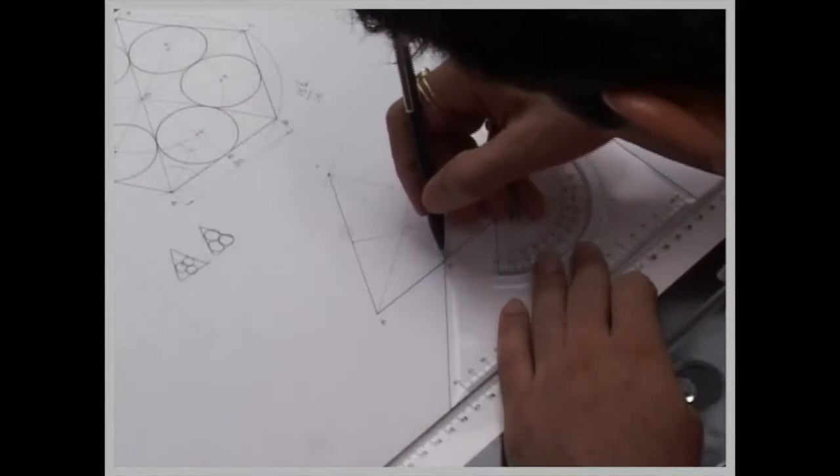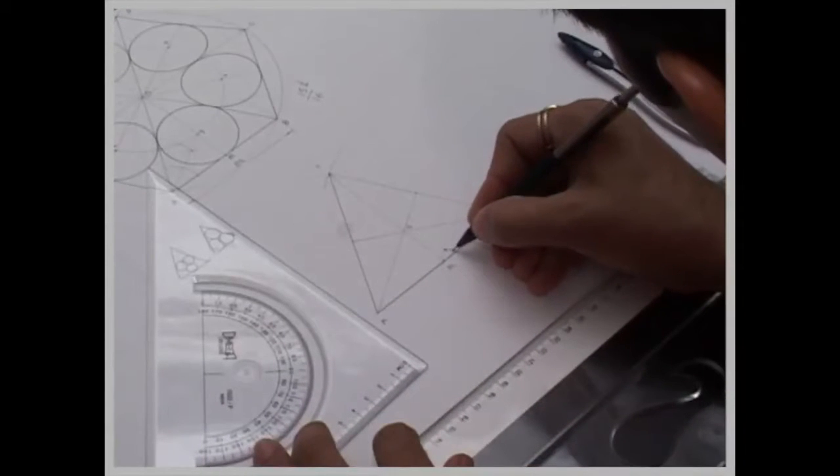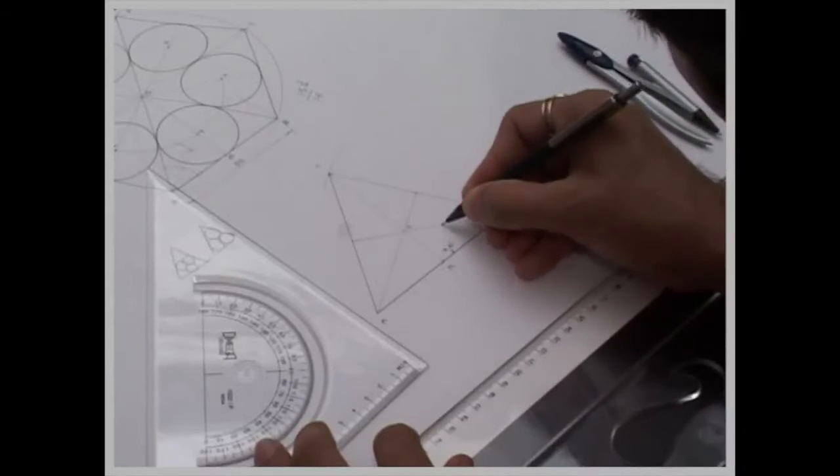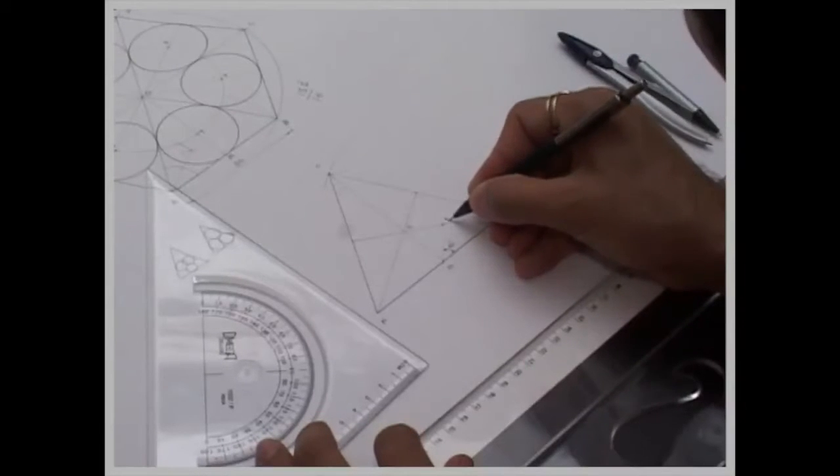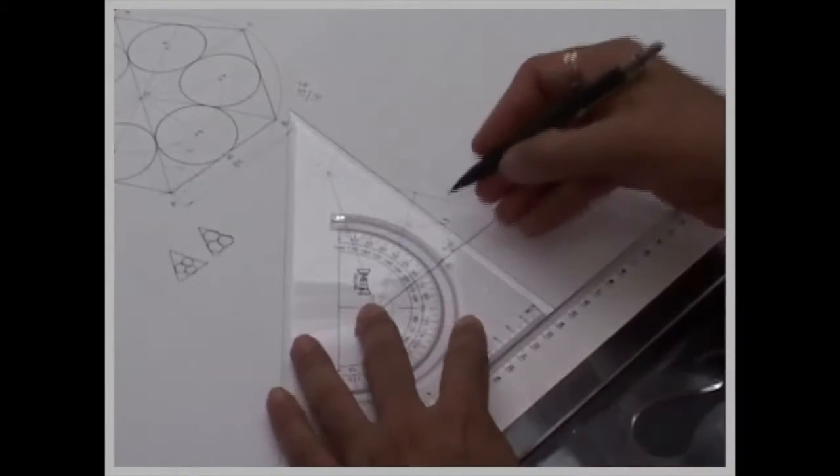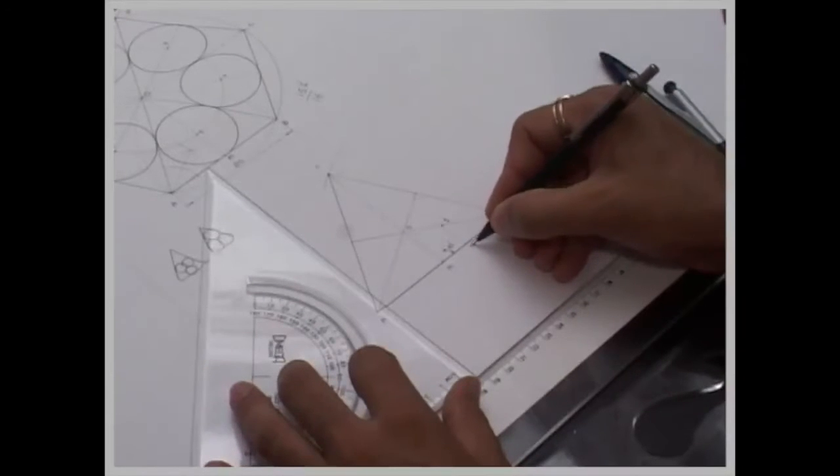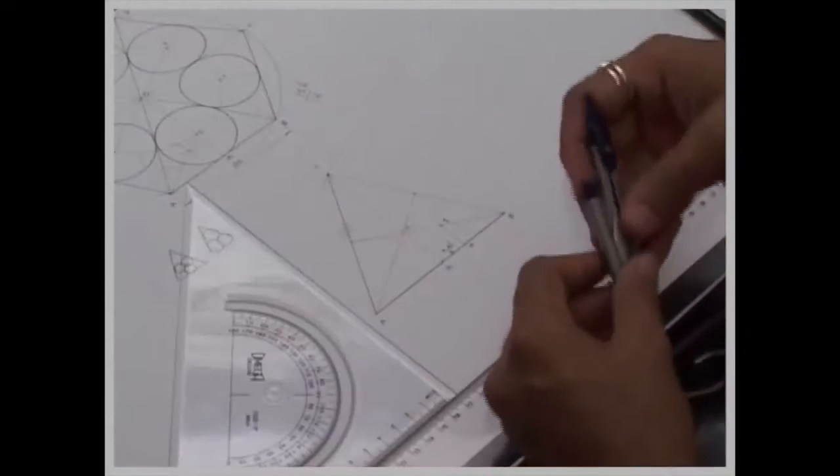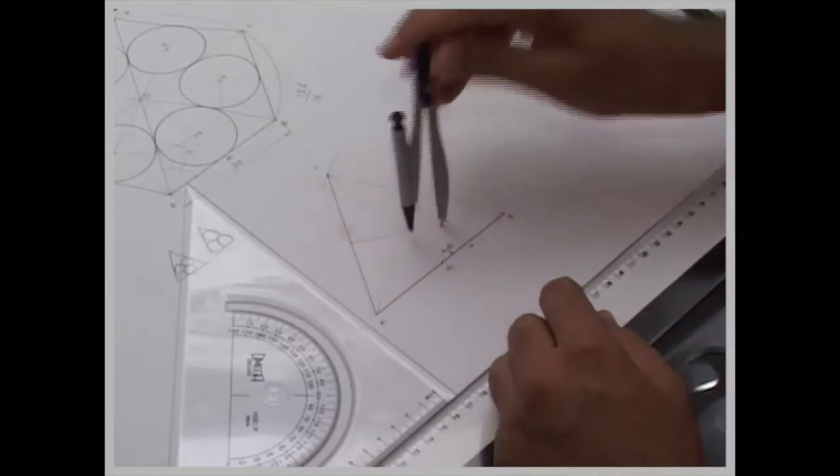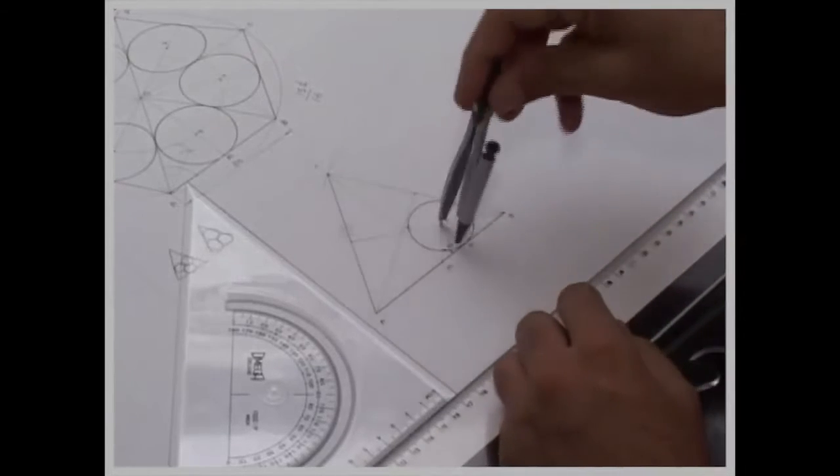we will take from M, we will take 45 degrees, wherever it will intersect that is point 1, we will draw a vertical line, that is point N, we will take 1 to N, we will draw a circle,